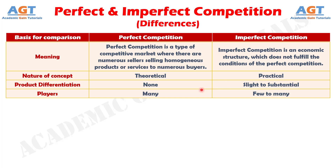Number four: when it comes to perfect competition there are many players in the market, whereas in imperfect competition there can be few to many players depending upon the type of market structure.